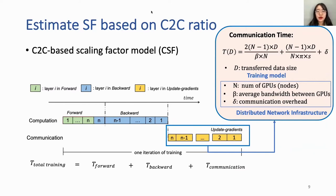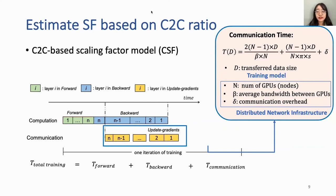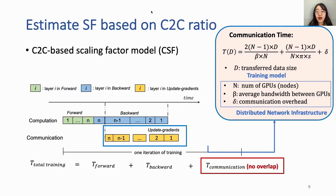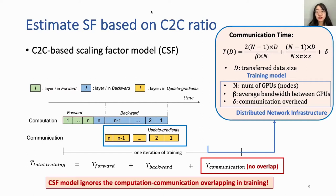However, there are some problems. Recently, many distributed frameworks adapt overlapping in training. Communication operations no longer launch after all backward computations finish, but instead transfer gradients of one layer immediately when ready. Thus, some communication time can be hidden by backward computation time, and the training time should account only for non-overlapped communication time. The C-to-C ratio is therefore no longer accurate for acknowledging computation-to-communication overlap.